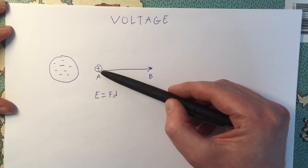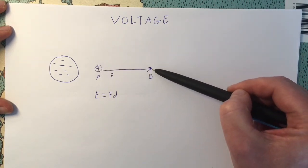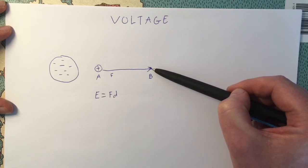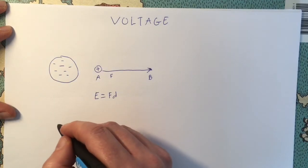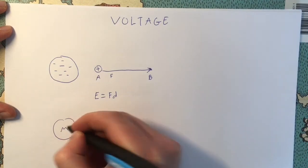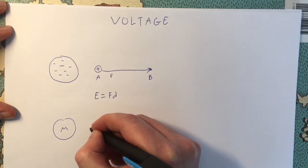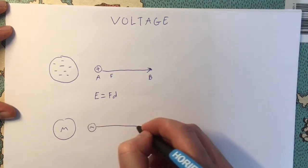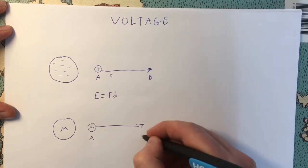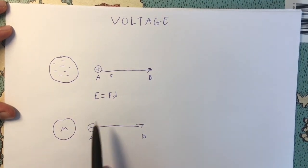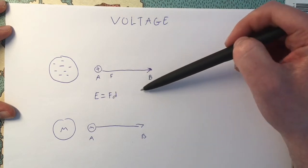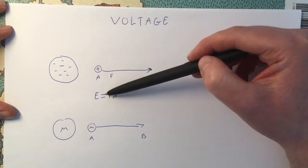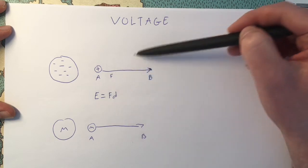This positively charged particle has some potential energy, and it's very similar to gravitational potential energy. If we have some large mass, and then some small mass, and we move it away from point A to point B, then we give it some gravitational potential energy. And it's this potential energy that is really the voltage.